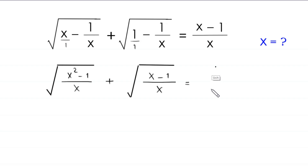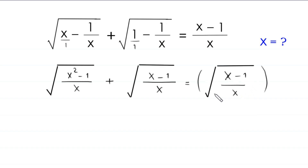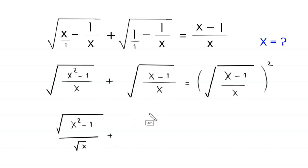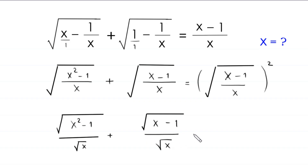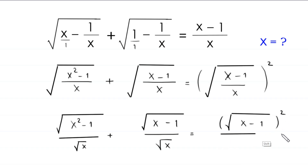...this can be written as root (x minus 1) divided by x, whole squared. This will become root (x squared minus 1) divided by root x, plus root (x minus 1) divided by root x, minus 1 whole squared, divided by root x whole squared.